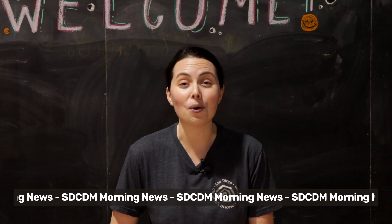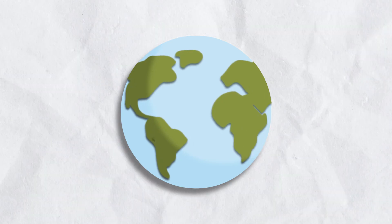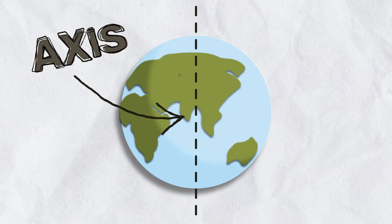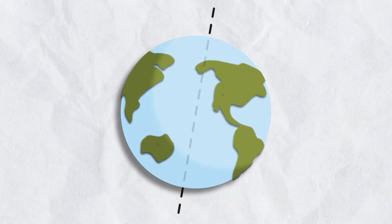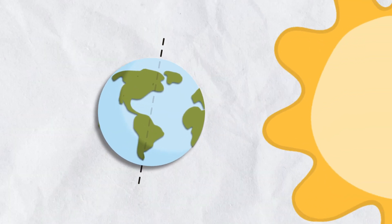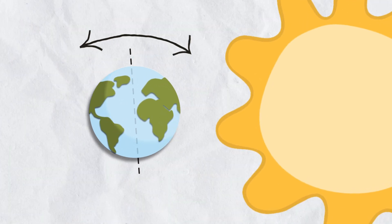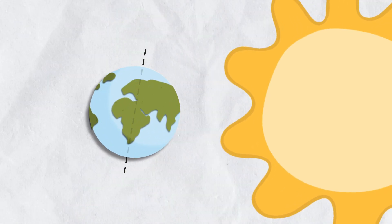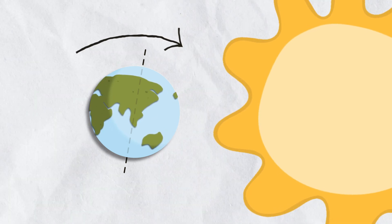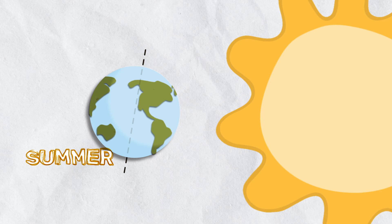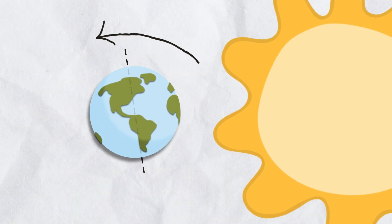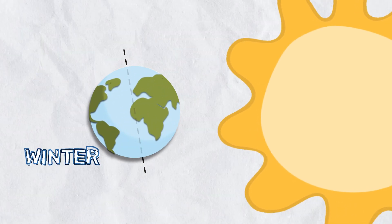These weather patterns are determined by how Earth is tilted towards or away from the sun. Earth rotates around something called an axis, which is an imaginary line that we can't see. This axis is tilted, which means Earth rotates at an angle. As the Earth rotates around its axis, its position to the sun changes. This is why we have seasons. When Earth's axis tilts towards the sun, we have our warmer seasons, like summer and spring. When tilted away, we have our colder months, like winter and fall.